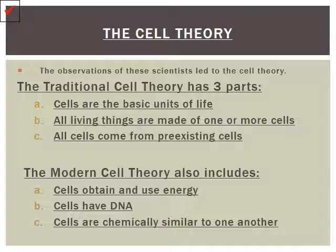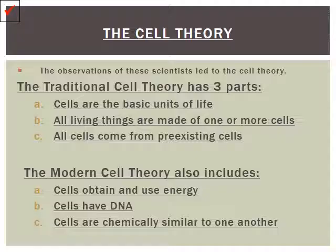The modern cell theory adds three more components: cells obtain and use energy; cells have DNA; and cells are structurally and chemically similar to one another. So plant cells will be similar to plant cells, and animal cells will be similar to animal cells.